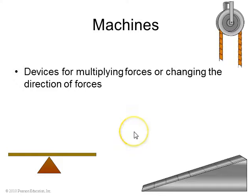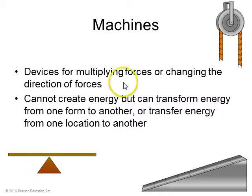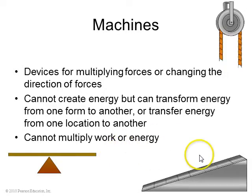So, a machine is a device which multiplies forces or changes the direction of forces. One of the principles of machines is that they cannot create energy, a simple machine, but it can transform energy from one form to another or from one location to another. But it cannot multiply work or energy somehow. There's a pulley. Here's an inclined plane. Here's a lever.